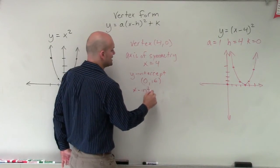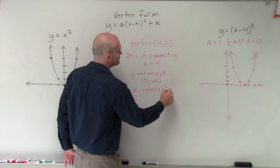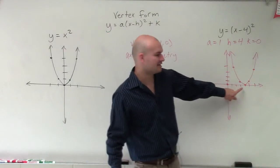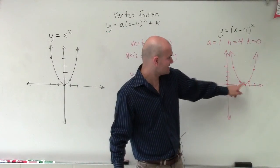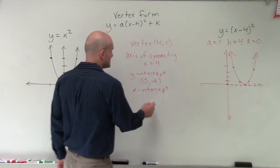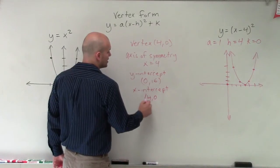Now, the x-intercept, we can actually see on our graph. And our graph, we can see that the graph touches our x-axis at the point 4 comma 0. So therefore, that's going to be our x-intercept.